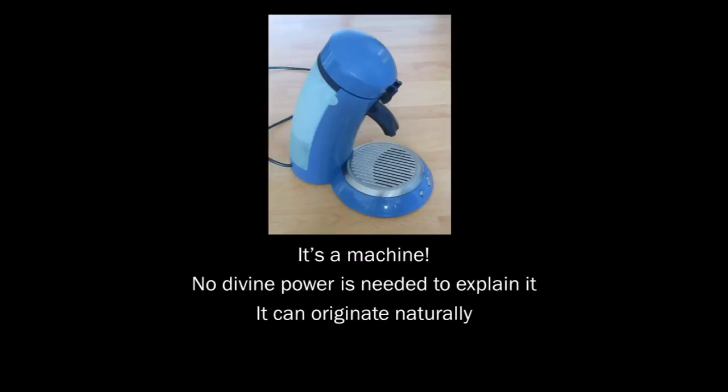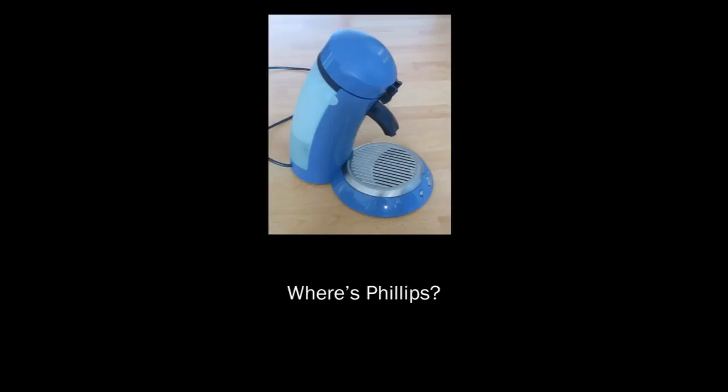We know this coffee machine was made by a company called Philips. We can take it apart to look for Philips. But if we do, we won't find Philips. So where's Philips? What were the scientists thinking, finding God by taking apart our body? That doesn't make sense. You can't find a maker by dismantling a machine.